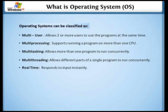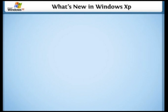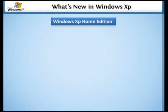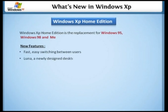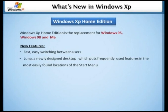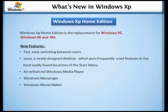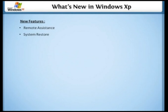In the upcoming tutorial, let's explore what Windows is and how it came up. What's new in Windows XP? Windows XP Home Edition was the replacement for Windows 95, 98, and ME. Some of the new features include fast and easy switching between users, Luna — a newly designed desktop which puts frequently used features in the most easily found locations of the start menu — Enhanced Windows Media Player, Windows Messenger, Windows Movie Maker, Internet Explorer 6, Remote Assistance, System Restore, and Network Setup Wizard.